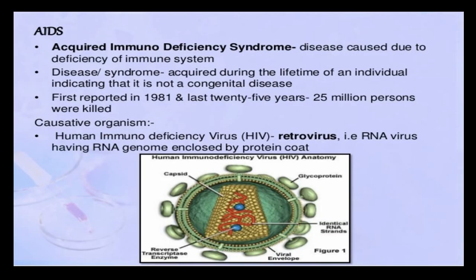AIDS stands for Acquired Immunodeficiency Syndrome. 'Syndrome' means the person is characterized by a set of associated symptoms and is prone to a large number of symptoms. It is caused due to deficiency of the immune system. This disease is acquired during the person's lifetime and is not present from the time of birth — that is the meaning of congenital.